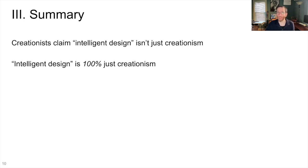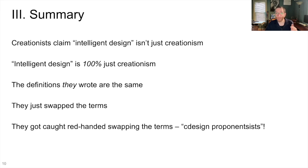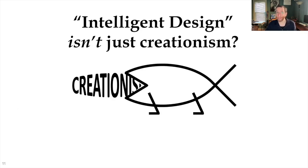So, to summarize: creationists claim that intelligent design isn't just creationism, but intelligent design is 100% just creationism. The definitions they wrote for intelligent design and creationism are the same. They literally just swapped the terms in the books and they got caught red-handed swapping the terms when they did a messy job of it. Remember: 'cdesign proponentsists.' And if that's not good enough, you can just find the people affiliated with intelligent design directly talking about how it really is creationism. So, intelligent design isn't just creationism—that is a myth, and now you know why. Thank you for watching. Please like, share, and subscribe, and don't get fooled.